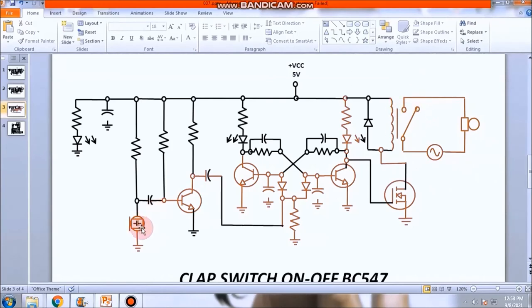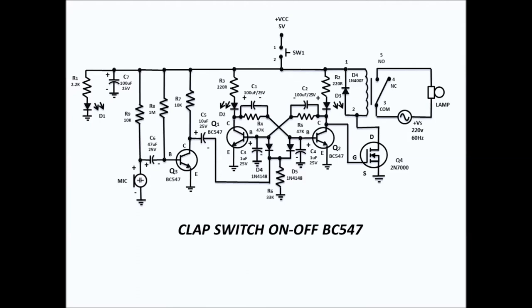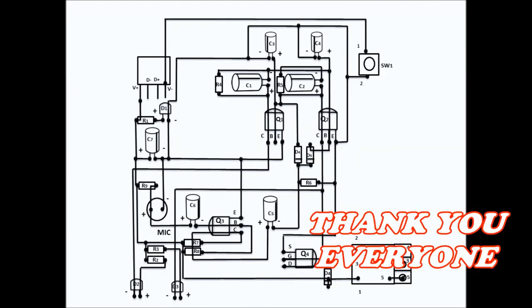So dito pag nag-ano ka, nagsalita ka o nag-clap ka, i-amplify ng transistor and then i-inject niya yung current sa dalawa transistor by stable. Alin sa dalawa man mayroong mag-on. Pag nag-trigger ka ulit ng another pulse yung kabila naman na mag-on, alternate. So kung nangyayari alternate din yung on ng MOSFET at alternate din ang on ng 220 volts lang.